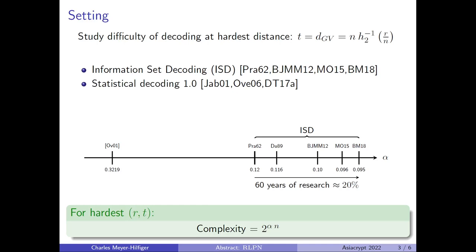There exist two main families of algorithms. The information set decoding algorithm, ISD. The first ISD was made by Prange in 1962. And then there exists another algorithm, the statistical decoding algorithm, which was introduced by Omura in 2001.